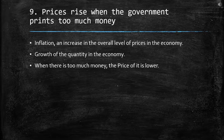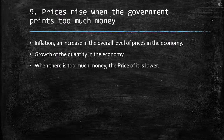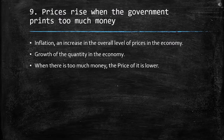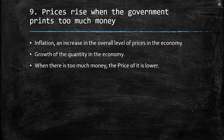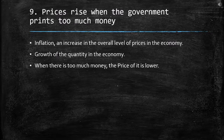The ninth principle is that prices rise when the government prints too much money. When there is too much money in the economy, we have inflation — an increase in the overall level of prices. When there is too much money, its value is lower. For example, when more people have more and more money, with just one dollar I cannot buy the same thing I could before. So it depends on the quantity of money.